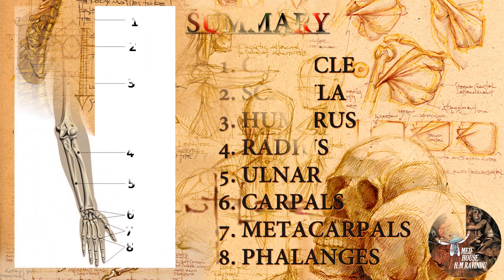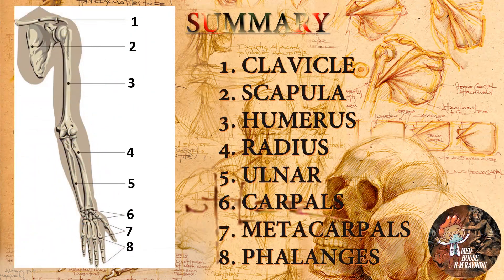Before the end of today's lecture, let's go through a brief summary of what we learned. The upper extremity consists of four regions: the shoulder girdle, the arm region, the forearm region, and the hand region. We also talked separately about the bones found in each of those regions.